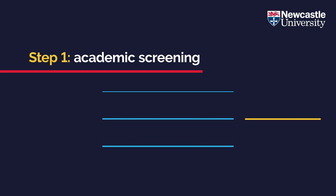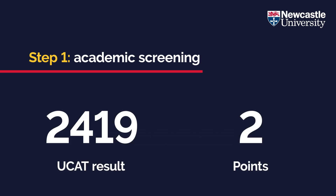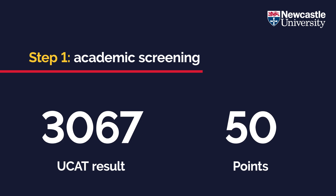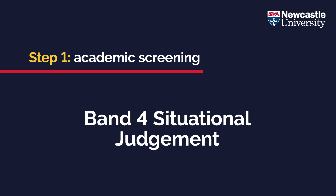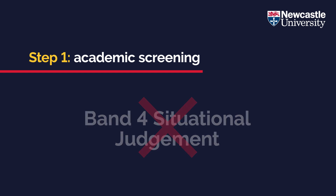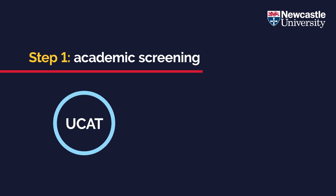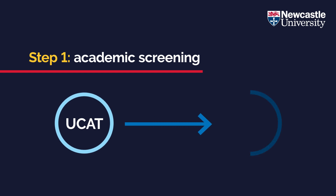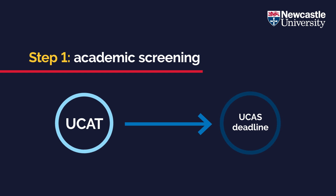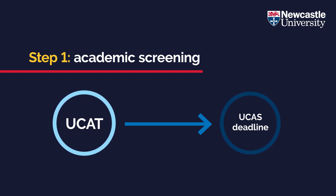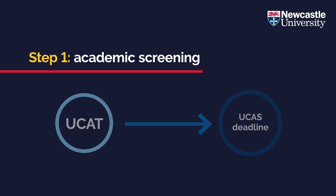We will then look at your UCAT result. A maximum of 60 points are awarded — the higher your UCAT result, the more points you'll receive. Candidates with a band four score in the situational judgment element will not be considered further. Please note that only UCAT results from the current test cycle are considered valid. UCAT tests are typically available to book from mid-May and take place between July and September before the UCAS deadline in October.